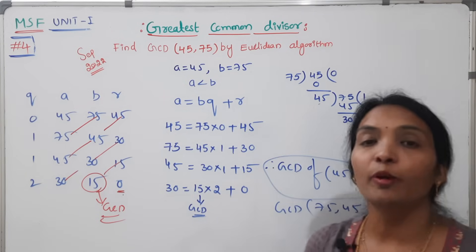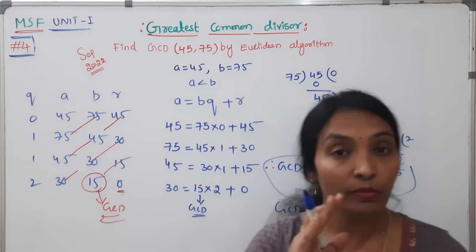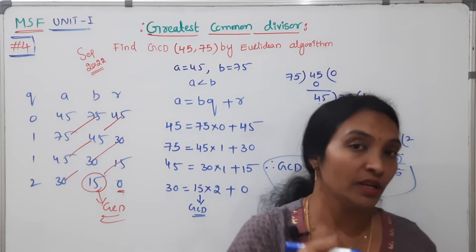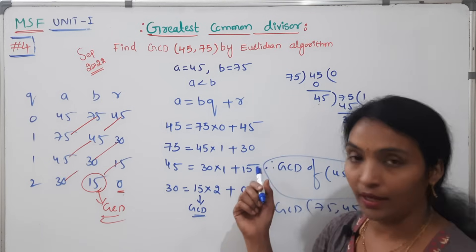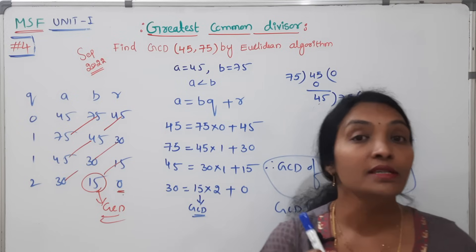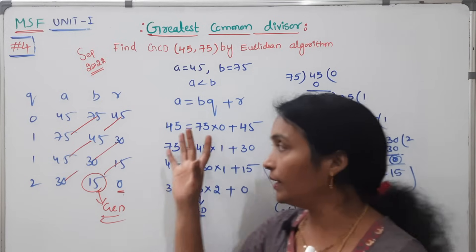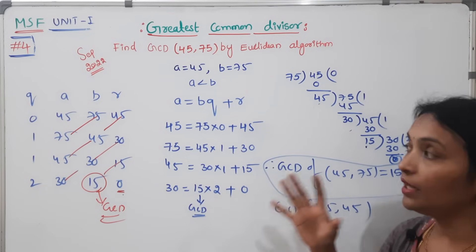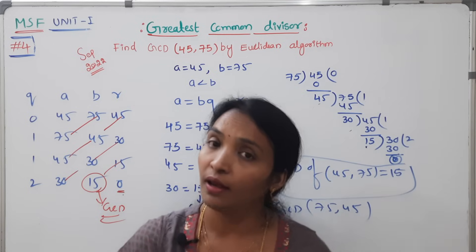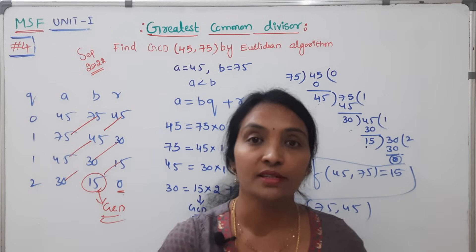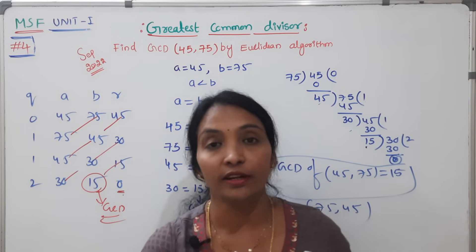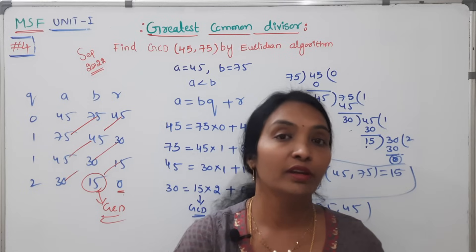This is how the problem is solved. If you want GCD based on prime factorization, we have covered that in the previous video. This is the Euclidean algorithm or division algorithm used to find the greatest common divisor. If you like, comment, share, like and subscribe to our channel, press the bell icon for regular video notifications.